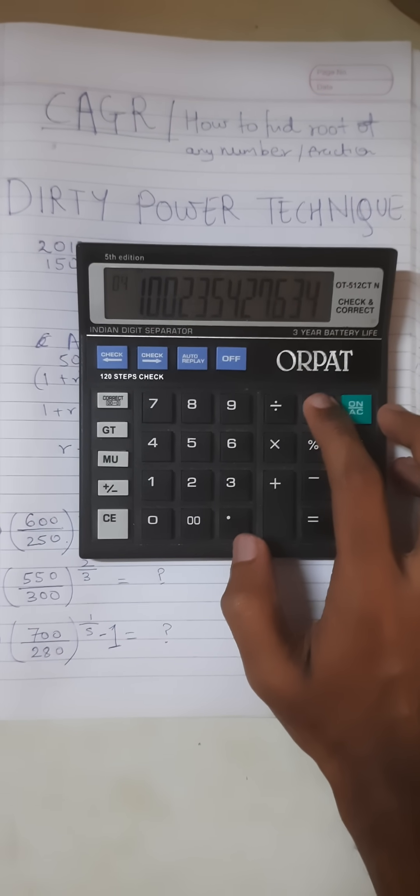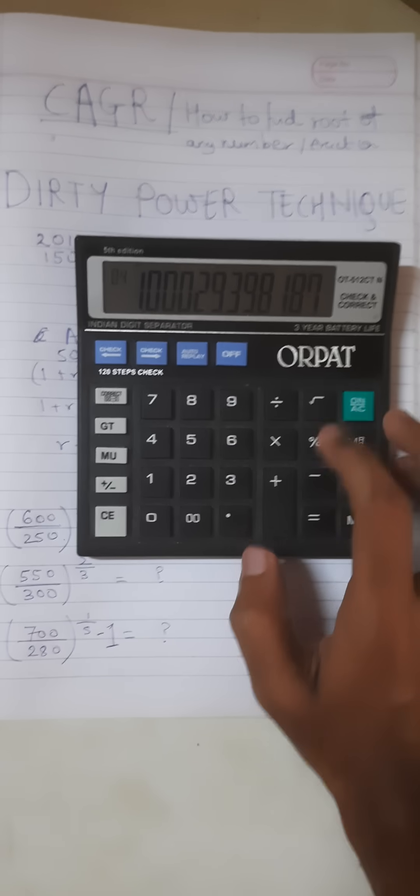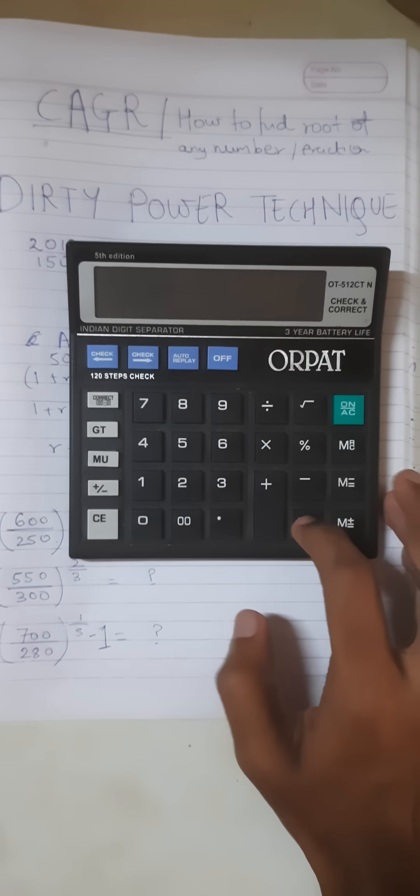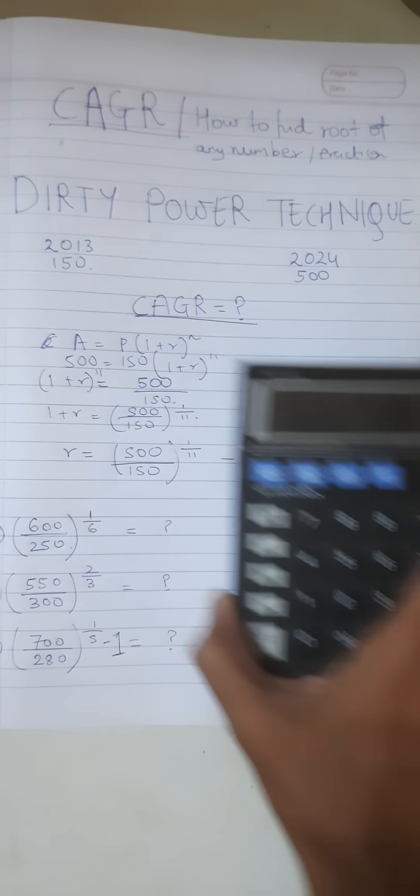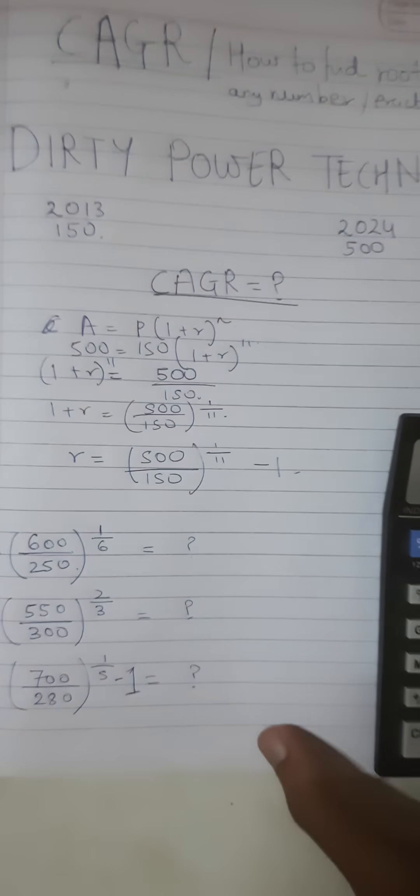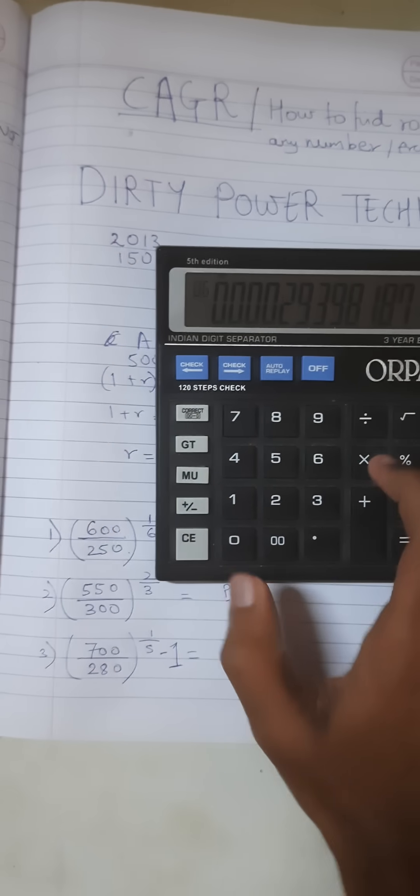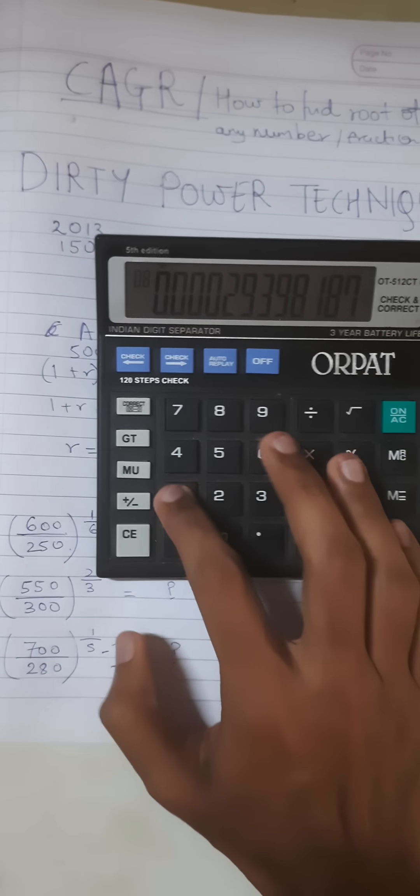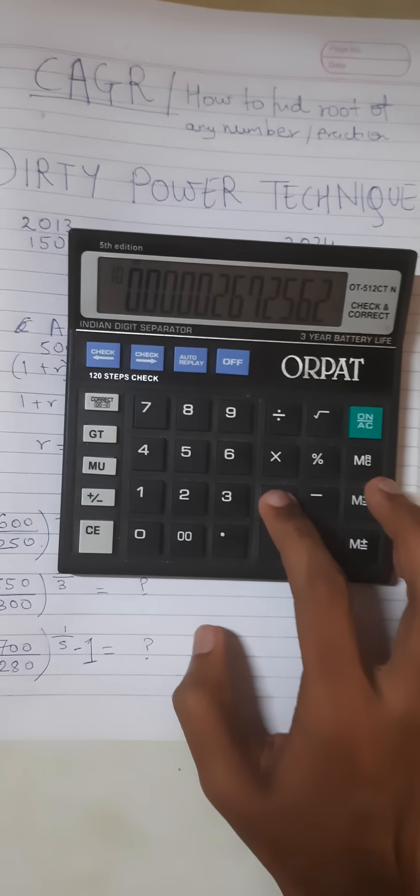Minus 1 is equal to. Now whatever answer you get, see the function 1 divided by 11. So basically multiply by 1 and then divide by 11 is equal to. Now we add back the 1.